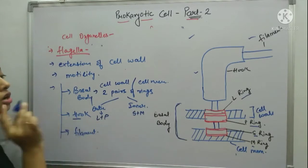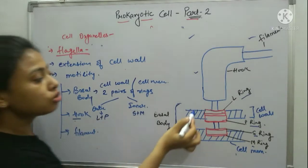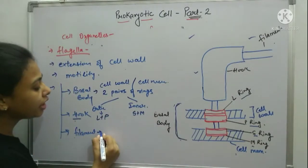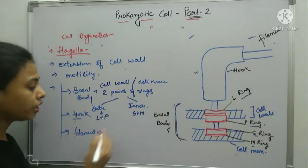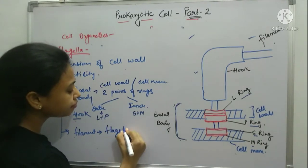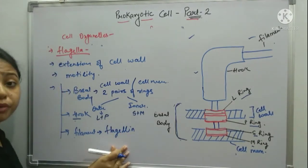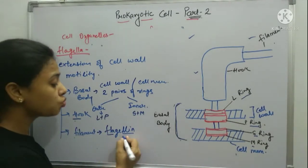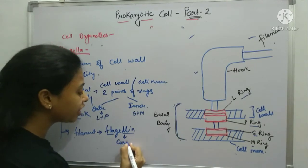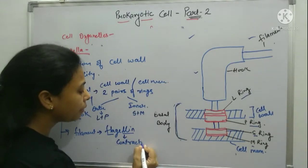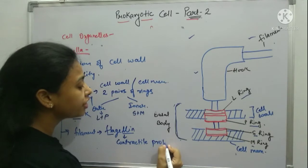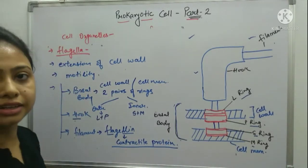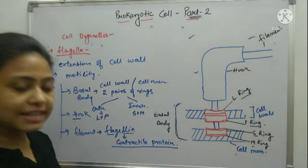The hook's main role is to connect the basal body with the filament. The filament consists of a protein called flagellin — just remember this protein. The role of flagellin is that it is a type of contractile protein, so it basically helps in motility. That is all about the flagella.